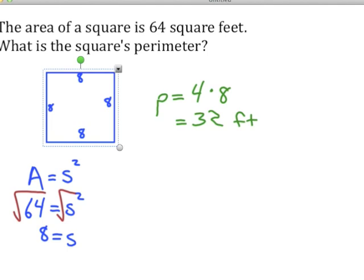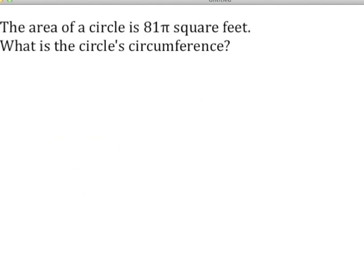Let's try another problem. The area of a circle is 81π square feet. What is the circle's circumference? In order to find circumference, remember circumference is either π times diameter or π times 2 times r.